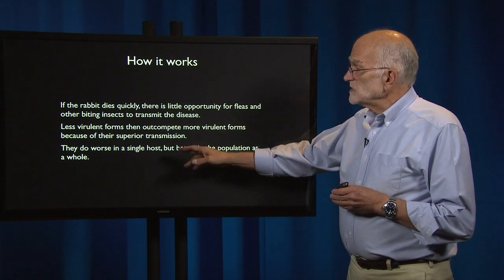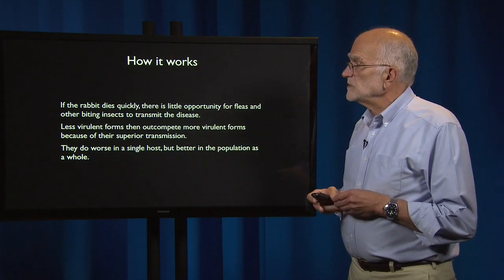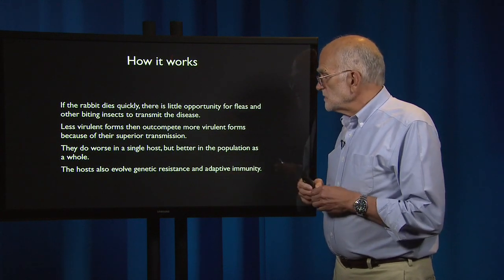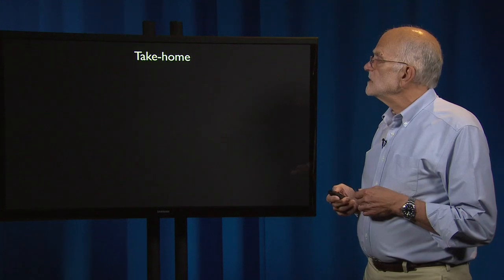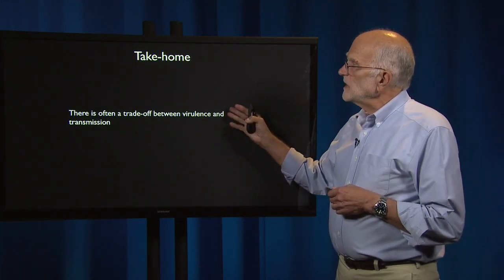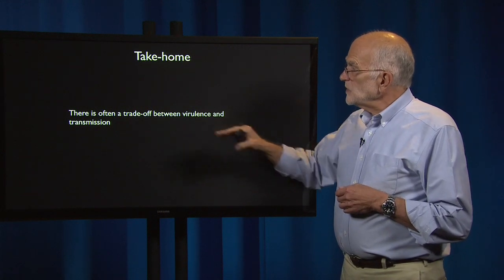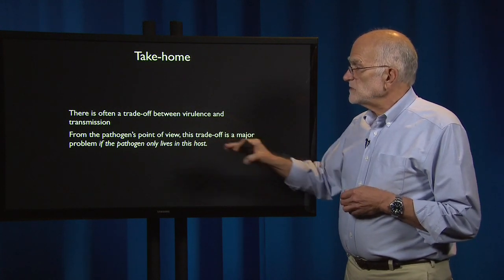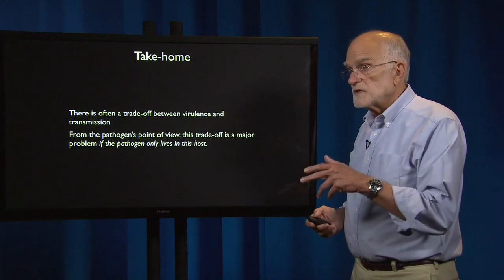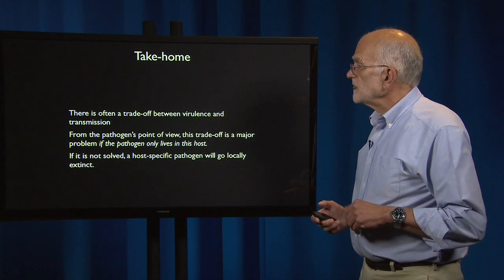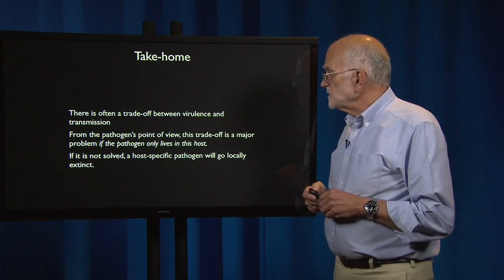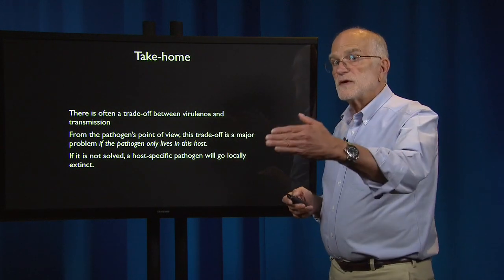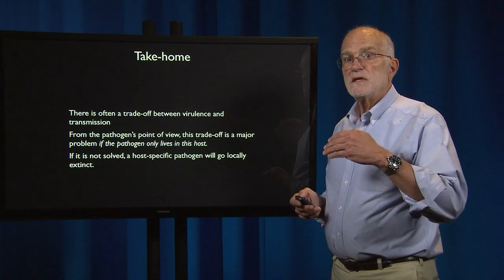The less virulent forms do worse within a single host but better in the population as a whole. The hosts also evolved genetic resistance, and they do have adaptive immunity. The take-home point from myxomavirus in Australia is that there's often a trade-off between virulence and transmission. From the pathogen's point of view, this trade-off is a major problem if the pathogen is only living in this host. If the problem is not solved, a host-specific pathogen will go locally extinct because it will essentially kill all of its hosts before it can transmit — which is what happened in the initial Ebola epidemics.